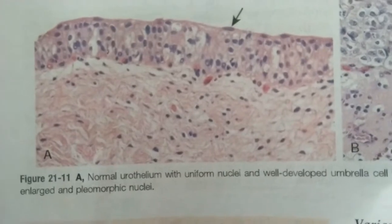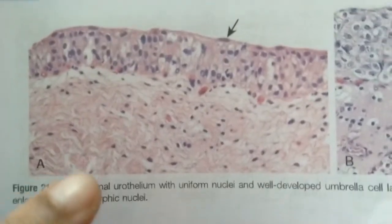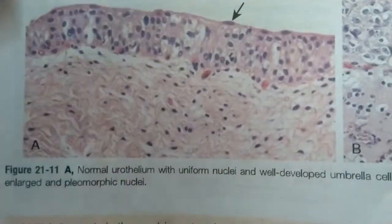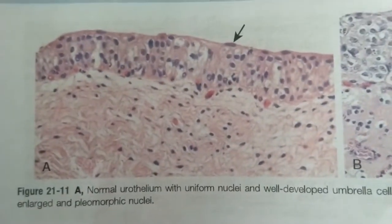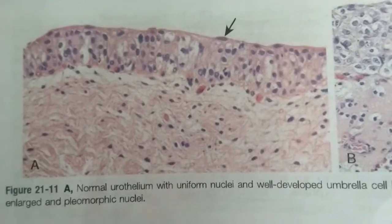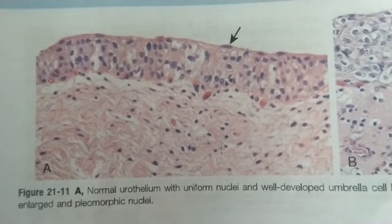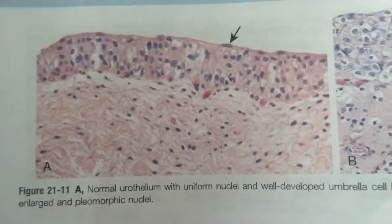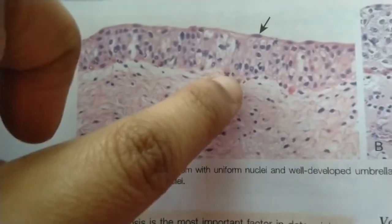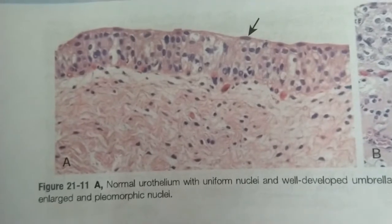This picture shows the normal urothelium, where you can see the uniform nuclei. Normally the urothelium is a transitional epithelium where the topmost layer consists of umbrella-type cells. It appears as a single cell layer, though it looks as though there are multiple cells — that is transitional epithelium.